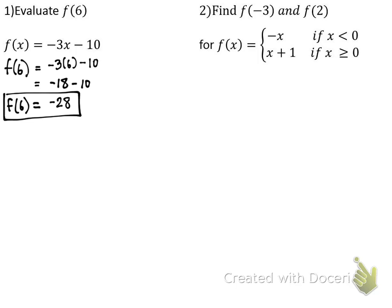Number two is like that baking machine that had two different ways it takes ingredients — it could make cookies or it could make cakes. This one says find the answer if you have negative three and two, and it gives us a couple of rules. If the number — the ingredient we put in — is less than zero, then we're going to use this equation. If the ingredient is greater than or equal to zero, then we use this other one. So let's put in negative three first. Since the ingredient is negative three, it's less than zero, so I have to use this first equation.